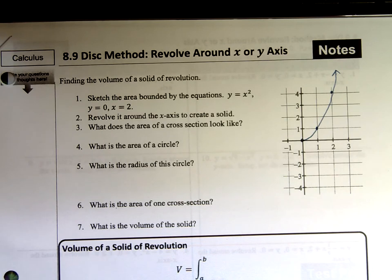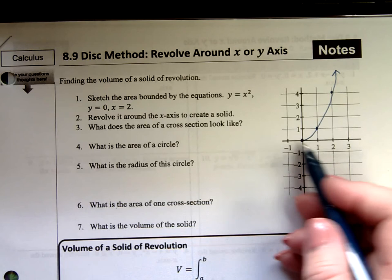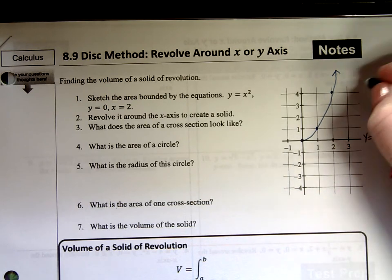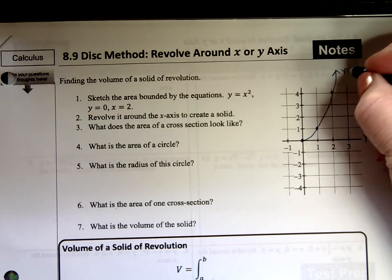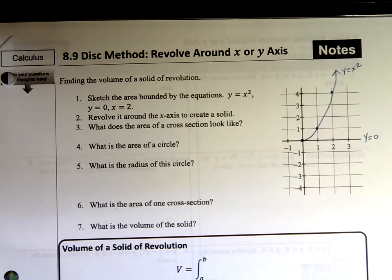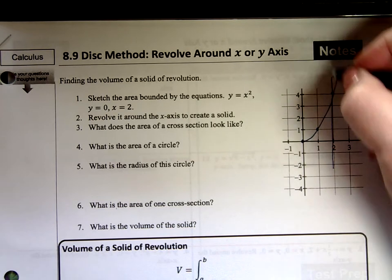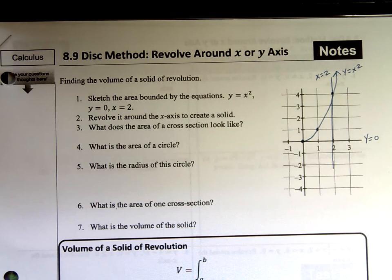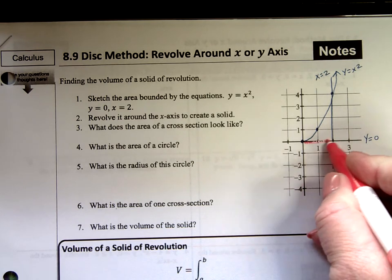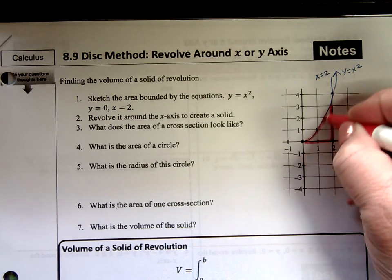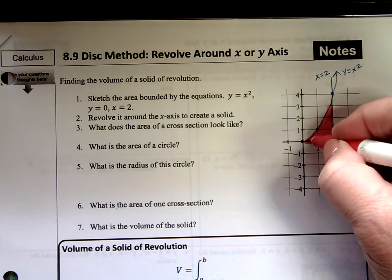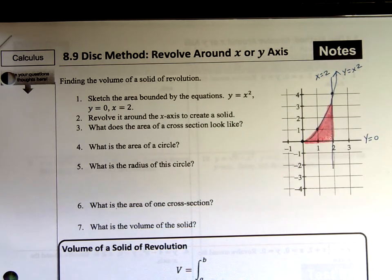Then it's bounded by y equals 0. Well, y equals 0 is the x-axis. This is y equals 0, this is y equals x squared, and then they say x equals 2. Well, x equals 2 would be a vertical line that goes through 2. So what's the region that we're talking about that's bounded by the three of those things? And that would be this section right in here.